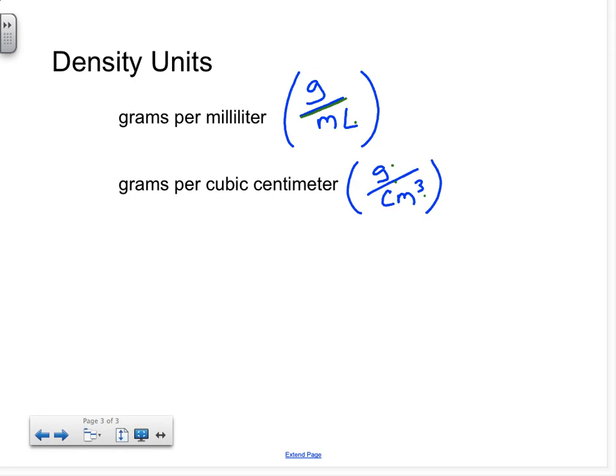So now go ahead and do the calculations for the lab, now that you know how to calculate density. Please round your numbers to the hundredth, since both your mass and your volume should have been to the hundredths place. Round your density also to the hundredths place. Have a good one. See you tomorrow.